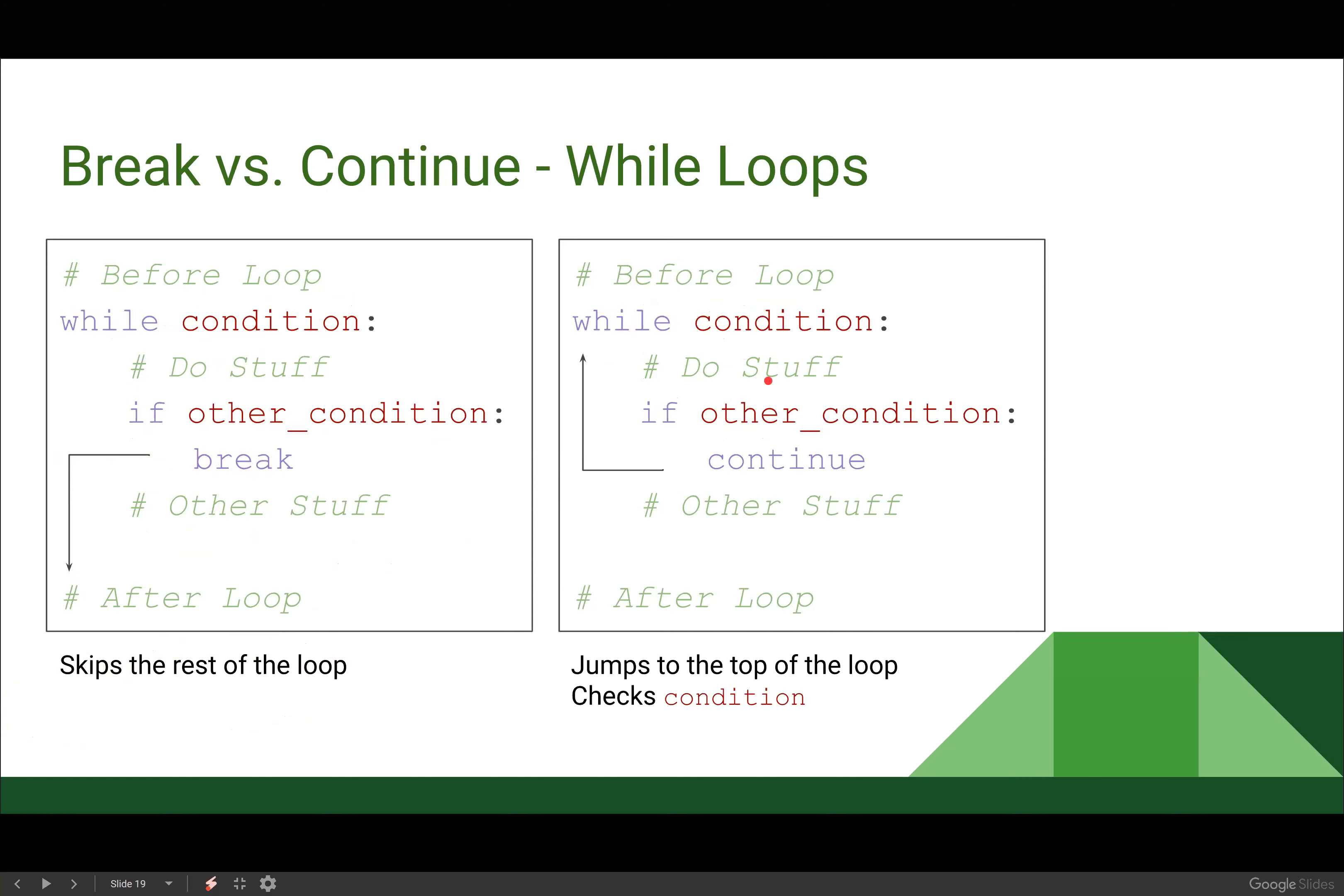With a continue, we have our same before and while condition stuff, our same do stuff, whatever we're doing in our loop. And if that other condition is true, now we're going to jump up here and check our condition again. So if our condition is still true, we're going to keep looping. Otherwise we're going to exit loop like we normally would when the condition is false. If this if statement is false, if this condition is false, we're not going to break, we're not going to continue, we're just going to continue doing the other stuff in our loop like we normally would.